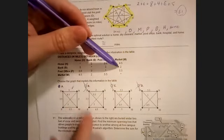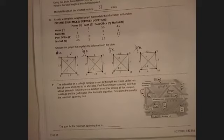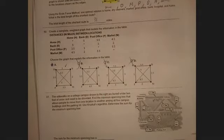Number 81: The sidewalks on a college campus shown to the right are buried under two feet of snow and need to be shoveled. Find the minimum spanning tree that allows people to move from one location to another among all five campus buildings and parking lot. Use Kruskal's algorithm. We need to find the shortest one, so I guess I could list these out.